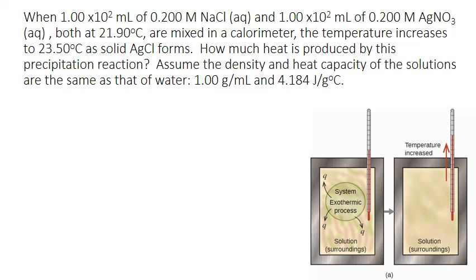Let's look at an example of a constant pressure calorimetry scenario. When 100 milliliters of a 0.2 molar sodium chloride solution and 100 milliliters of a 0.2 molar silver nitrate solution, both at 21.9 degrees Celsius, are mixed in a calorimeter, the temperature increases to 23.5 degrees Celsius as solid silver chloride forms. How much heat is produced by this precipitation reaction? The temperature rises, and since we're measuring the temperature change of the surroundings, a rise in temperature indicates that heat is being released by the chemical reaction — we're dealing with an exothermic process.